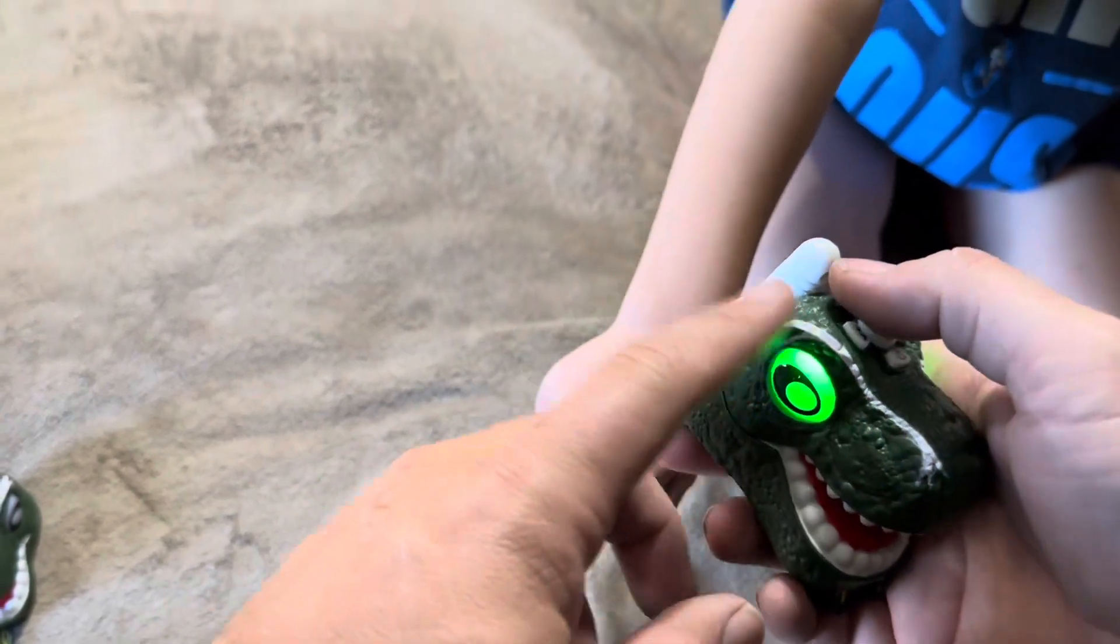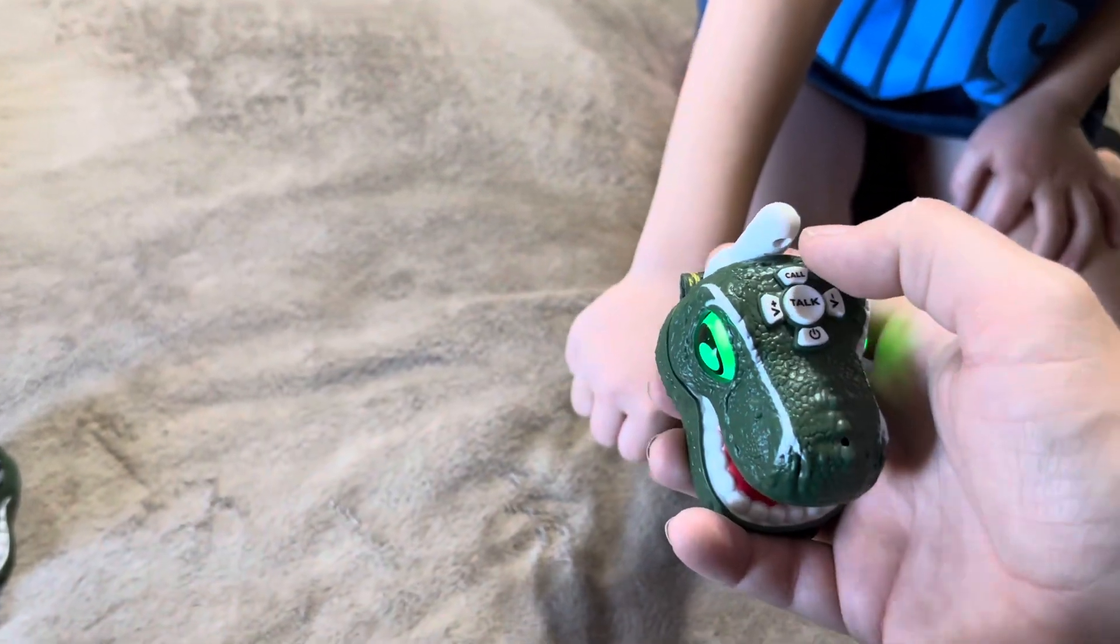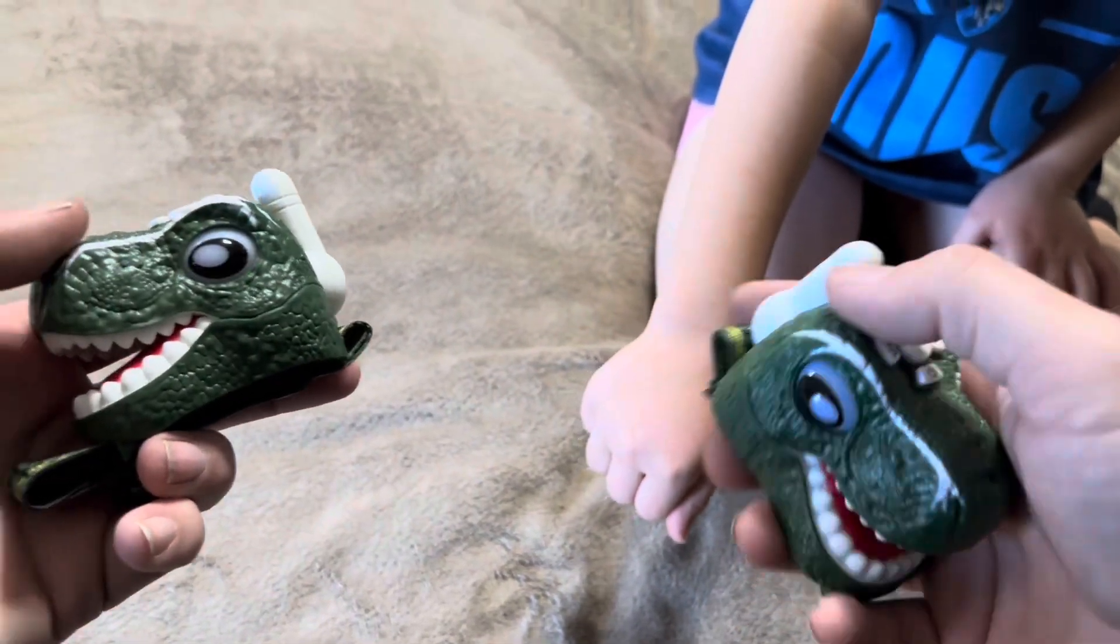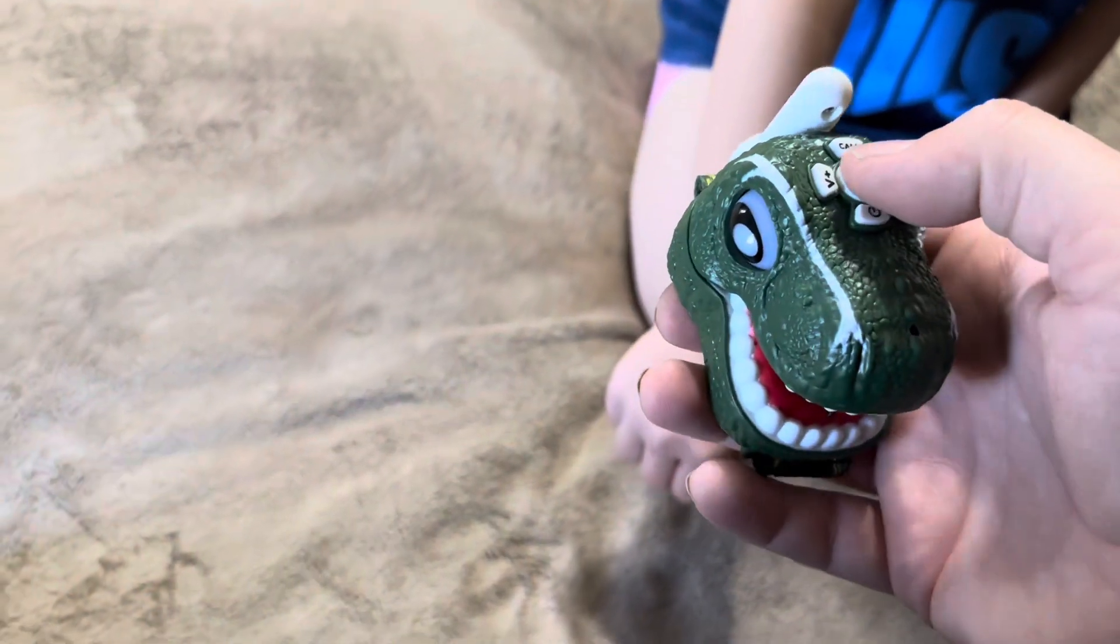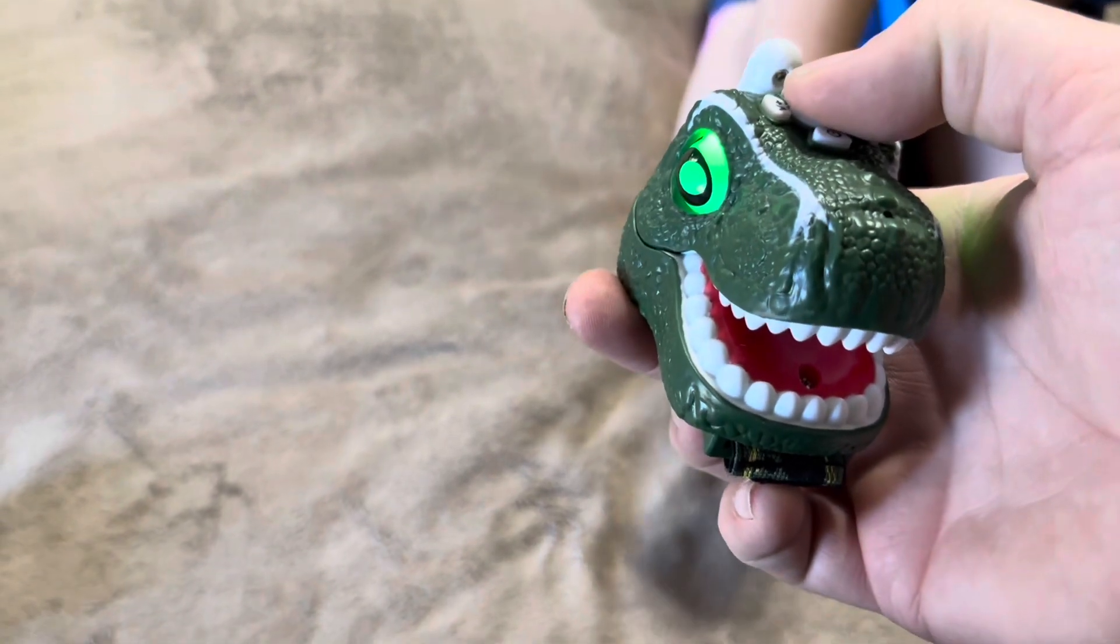Now what you can do is if you want to call between one and the other you can just push the call button. And the other one is going to ring. You can see it will light up like that as well. And then they can also push and hold down the talk button. And you can talk from one to the other.